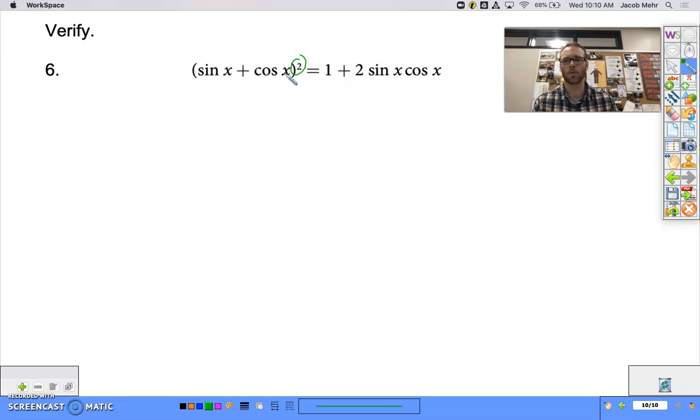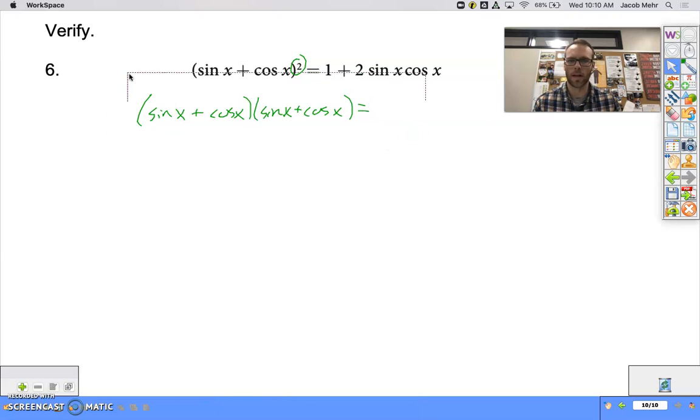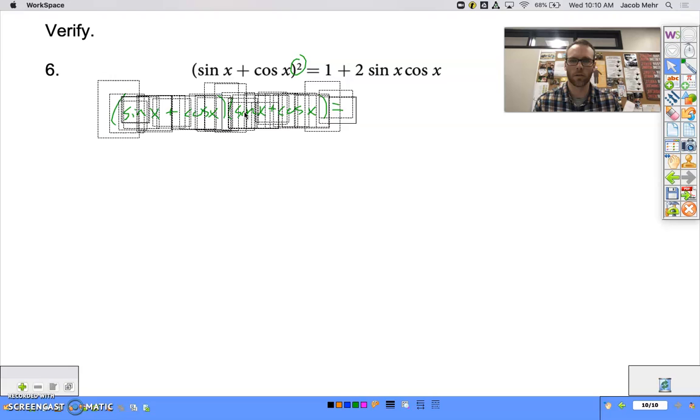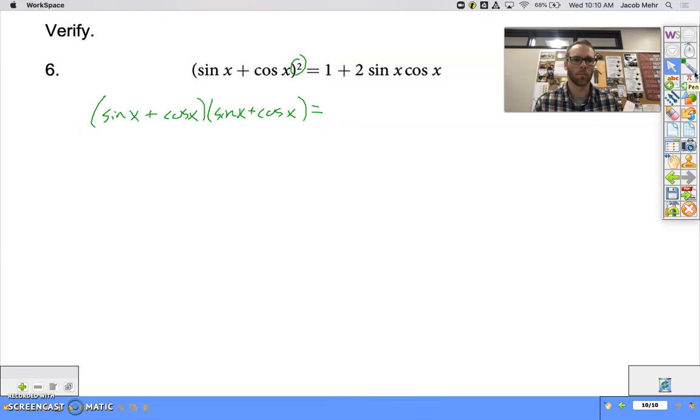So what I'm going to do is I'm actually going to write this out as a squared term here. And we have sine of x plus cosine of x times sine of x plus cosine of x. I didn't quite keep my equal signs in line there. Let me shift this over. There we go.